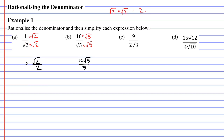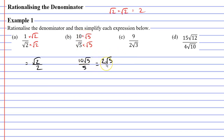Root five times root five gives me the whole number five. Now, we've been told that we need to also simplify these, not just rationalize the denominator. And for question B, we can simply go ten divided by five, which is two. So, we now get two root five. And this is great, because originally I had a fraction, and after I rationalized the denominator, I ended up with something that wasn't a fraction. Fractions are always a little difficult to work with — I'd much rather have something that's not a fraction.